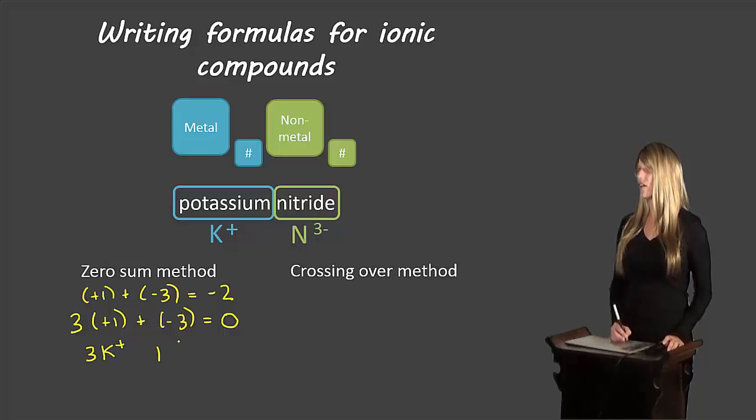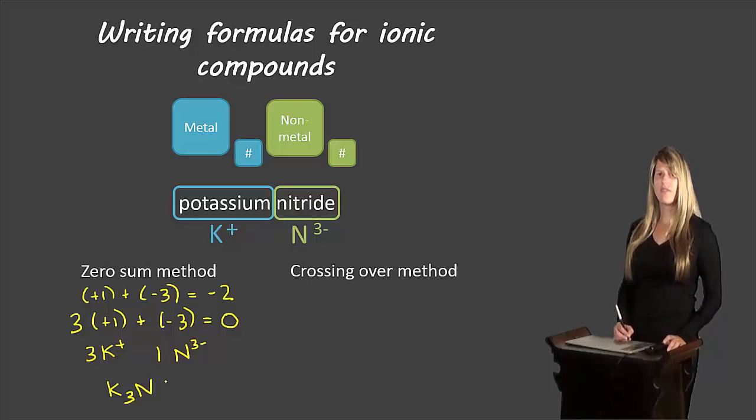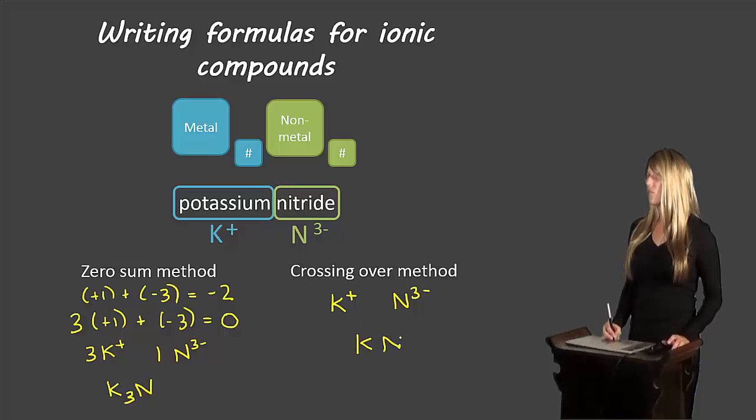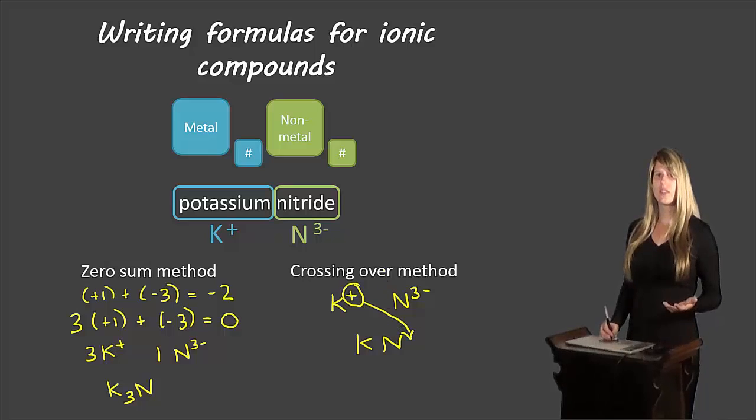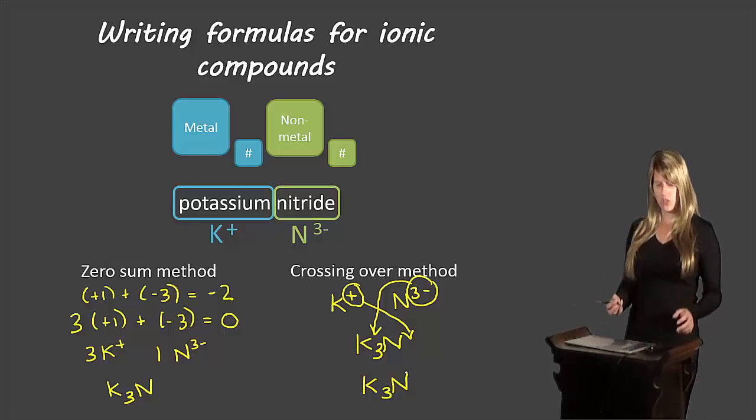So we need three of the potassium ions, and one of the nitride ions. So we can write that as K with a subscript three, since we need three of them, and then N for nitrogen, and we don't put any subscript because we don't write our subscript ones. If we try our crossing over method, here we'll write the two symbols beside each other. The one plus from potassium comes over to nitrogen. We don't write subscript one, so we leave that blank. And then the charge of three negative from nitrogen comes over to the potassium, and we write that as a subscript three. So we end up with K3N. Again, the same formula using the two methods.